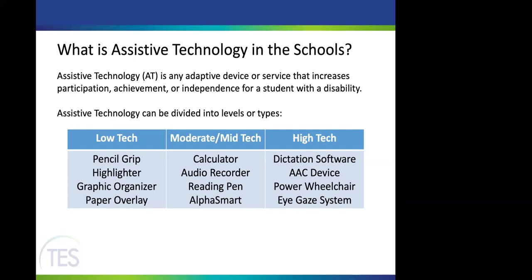Low-tech AT is sometimes clearly defined in an IEP, or it may just be built into the classroom for all students. The next level is moderate or mid-level technology — things that usually have batteries or an electronic component. Examples include calculators, audio recorders, a reading pen, or an AlphaSmart, which is a simple word-processing device with just a keyboard and a thin line of text so students can type instead of write, but it's much simpler than a full computer.